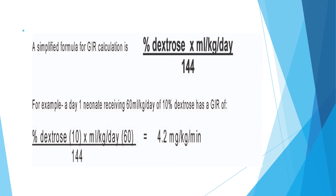This is a simplified formula for glucose infusion rate calculation. Glucose infusion rate is calculated as: percentage of dextrose in the fluid times the amount of fluid in ml/kg/day, divided by 144. For example, if a one-day-old neonate is receiving 60 ml/kg/day of 10% dextrose, the glucose infusion rate is 10% times 60 divided by 144, which equals 4.2 mg/kg/minute.